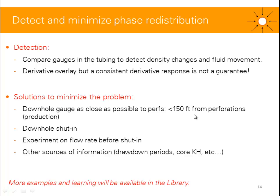Some solutions to minimize the problem: we should try to place the downhole gauge as close as possible to the perforation — in a production context, lower than 150 feet from the perforation; for exploration and appraisal, try to go as low as 50 feet or lower. We could apply a downhole shut-in to help minimize phase redistribution. We could do some experiments on the flow rate just before shut-in — try to flow the well at the highest rate possible to lift the heavier fluid in the wellbore, or even play with the flow rate to change the flow regimes. Certain flow regimes are more likely to create phase redistribution. Or we could use other sources of information such as drawdown periods or permeability from core.